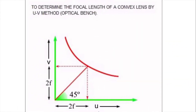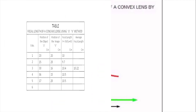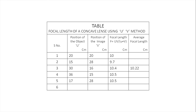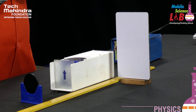This experiment can be performed for different positions of the object. Correspondingly, the positions of the images can be captured on the screen, measured, and the results are tabulated in the tabular column. The focal length of the concave mirror turns out to be the same. Is it understood? Thank you very much.